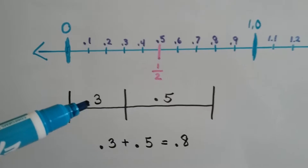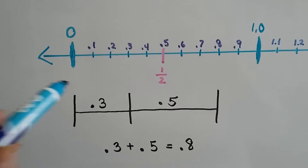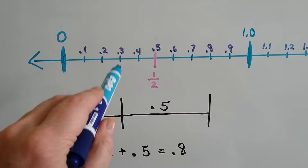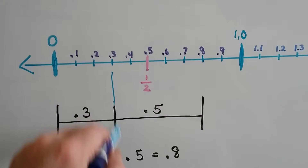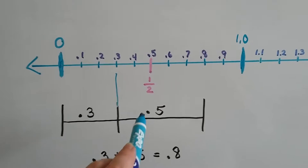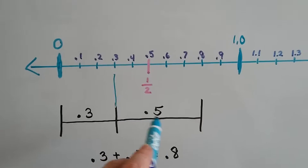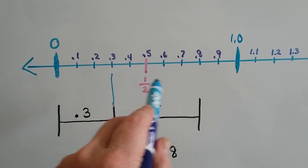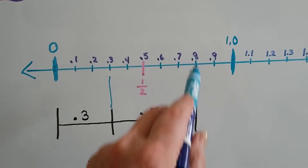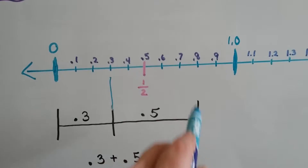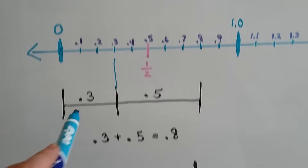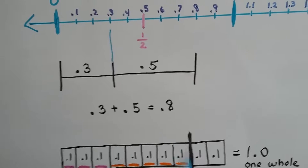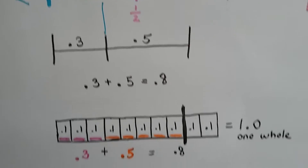We can have three tenths — one, two, three — that would be right here. And we can add five tenths: one, two, three, four, five. And that would get us to eight tenths. Three tenths plus five tenths equals eight tenths.